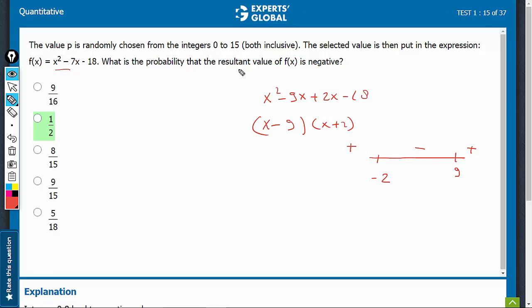So, what is the probability that the resultant value is negative? The value is negative between 9 and minus 2. At minus 2 and 9, the value is 0. So, between these values, minus 1, 2, positive 8. Minus 1, 0 are two values, 1 to 8 are 8 more values.